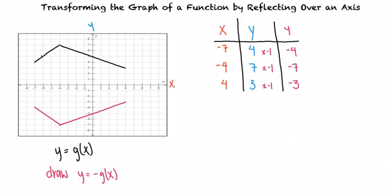And now this time, the x-axis acts like a mirror, because the graph looks the same as the old one, but reflected over the x-axis.